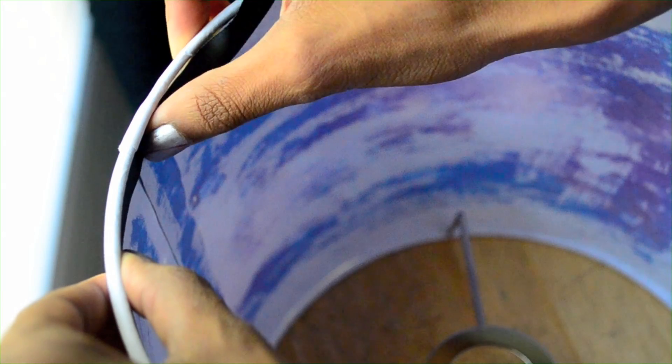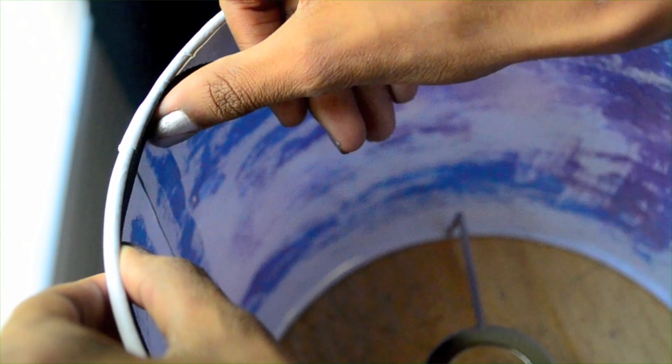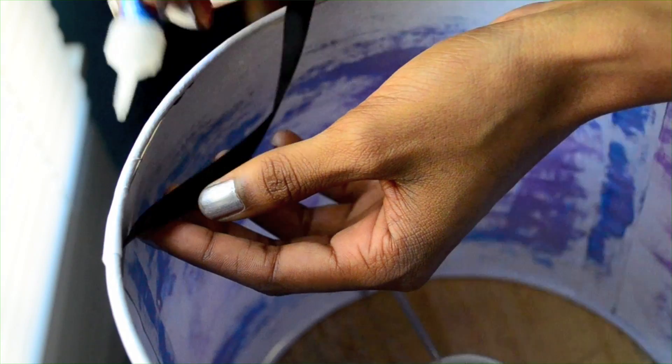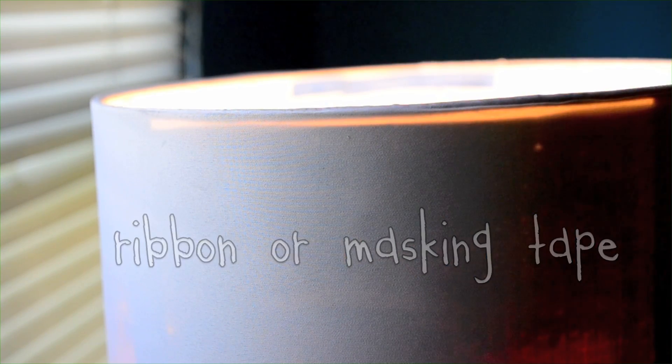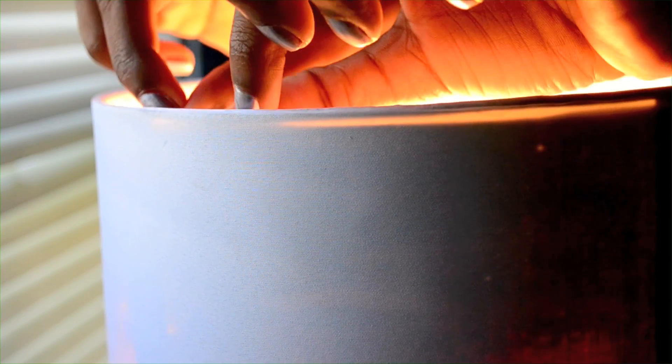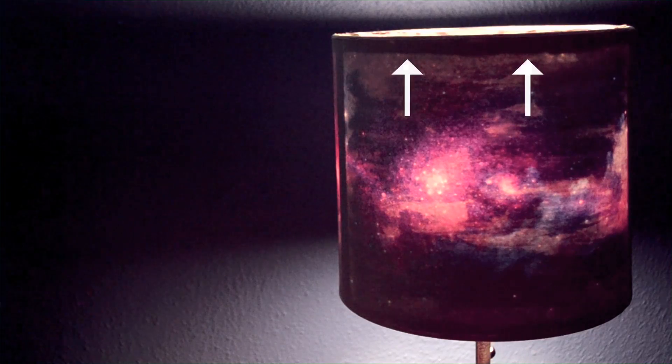You might not have this problem depending on the lamp that you buy, but if you do, I fixed it by taking a ribbon and gluing it around the top and bottom edges of my lamp. This will give the lamp dark borders around the top and bottom, but I don't mind this at all.